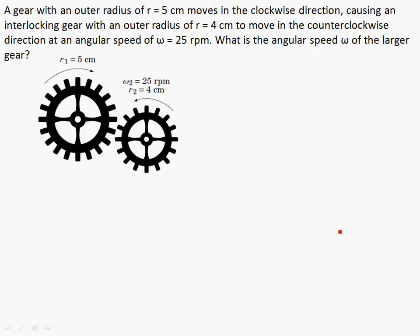Okay. So here's a problem with gears. A gear with an outer radius of 5 centimeters—so the reason they say outer radius is if that was the center, if you go to the outside over here, so that distance from here to here, that's 5 centimeters. Causing an interlocking gear with an outer radius of 4 to move in a counterclockwise direction at an angular speed of 25 revolutions per minute. Okay, what's the angular speed of the larger gear?